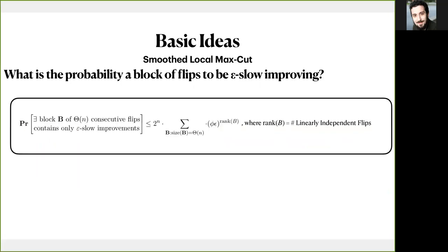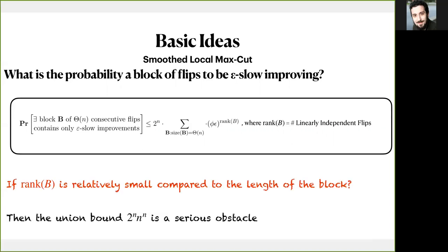Back to real world now. In a graph where flips are too correlated by the structure of the graph, you cannot expect that this independence holds globally. However, if we write down the linear forms of the improvements of every flip of the block, our intuition was partially correct. It is dropping exponentially to the number of the linear independent flips, which we will call the rank of the block. Thus, the ultimate question here is how many linear independent forms can we have? How many independent flips can happen in any linear length block? Unfortunately, we know cases where at least one of the linear blocks has small rank. Thus the union bound 2 to the n is a serious obstacle in order to bound this catastrophic event.